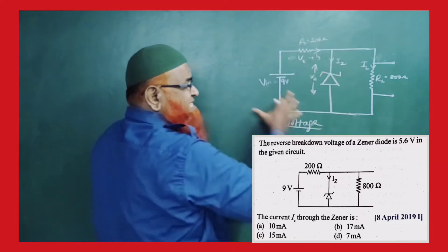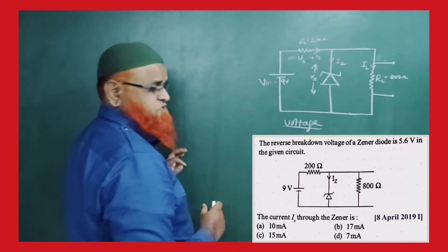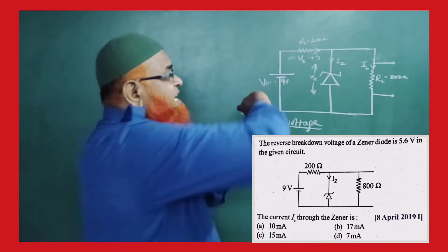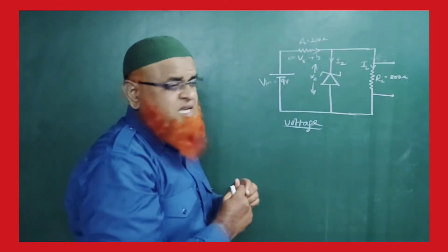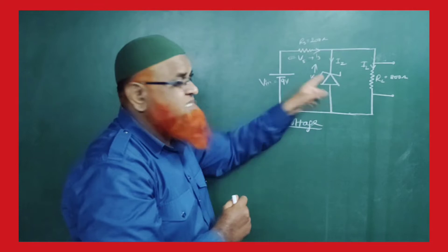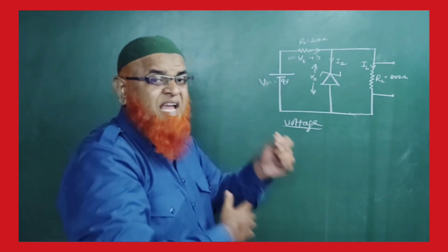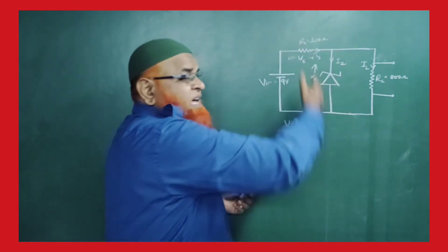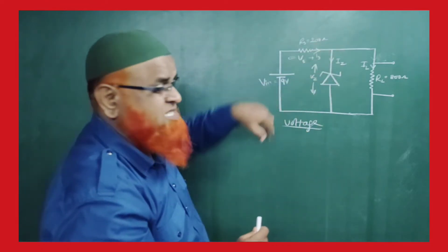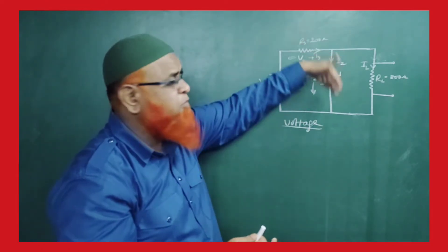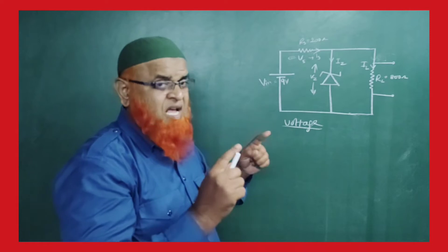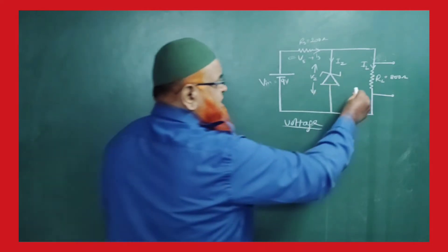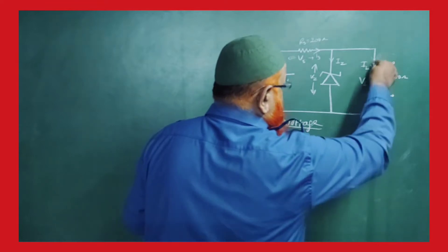Even though the input increases, the current also increases, but the Zener diode acts like a bypass circuit by bypassing the extra current coming from the input, so the output remains constant. This voltage across the load remains constant.